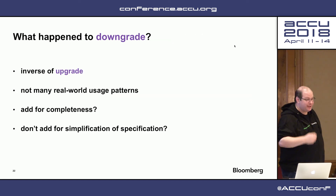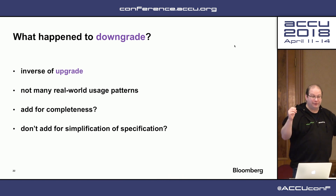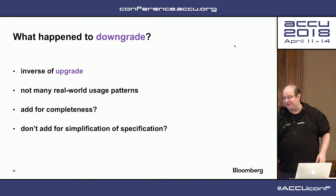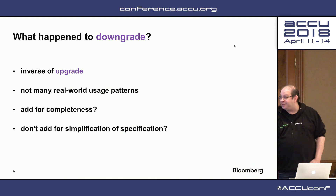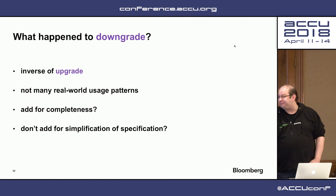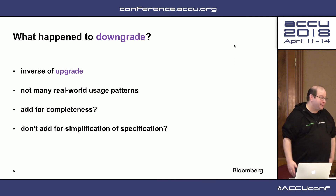Before I conclude, let me say what happened to downgrade. I submitted this proposal while thinking about the whole problem, and downgrade was in there. It's the inverse of upgrade — however you structured the upgrade, those portions of the three steps have to be undone. I couldn't find very many real-world usage patterns for it. If you're putting this into the standard, would you add it for completeness? Possibly. Or would you leave it out to simplify the specification? Which is what I would probably go with.